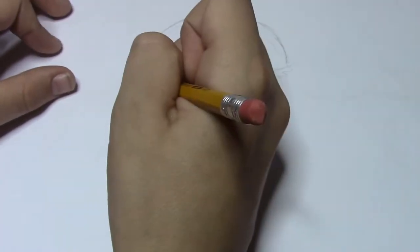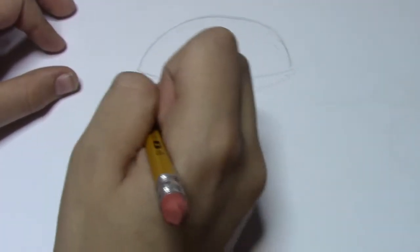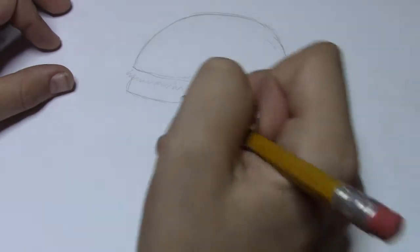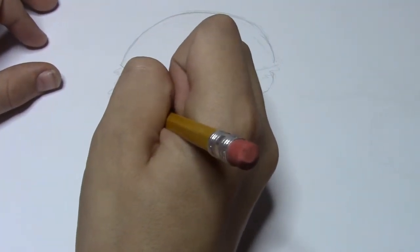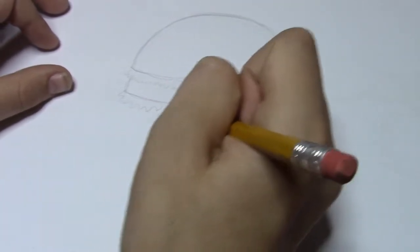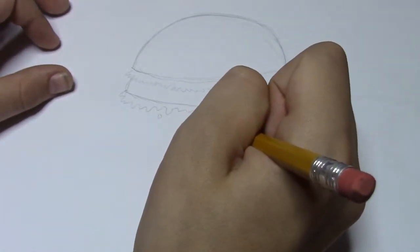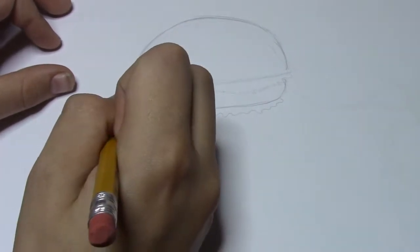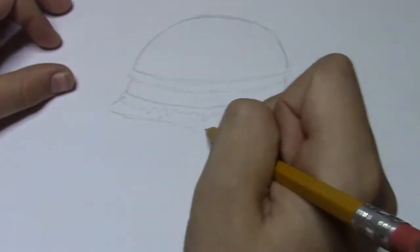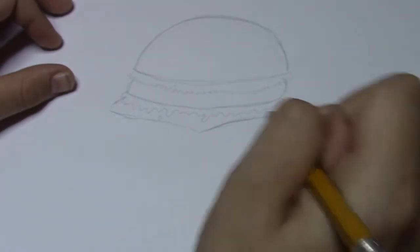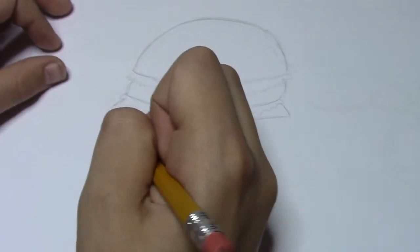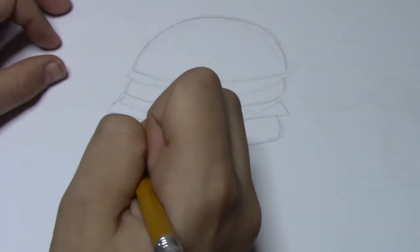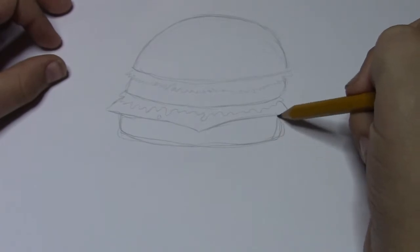Next we're going to have our lettuce. Then we're going to have pretty much the burger part of the hamburger. Next, we're going to have a layer of mustard. Then cheese. Then the bottom of the burger.